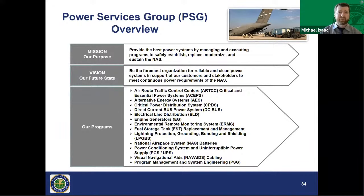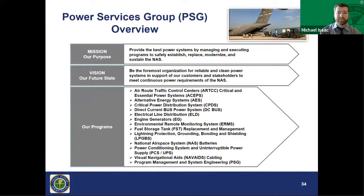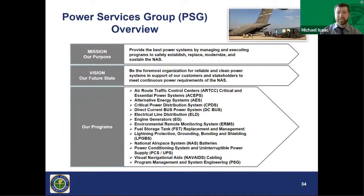We currently execute across 13 different program areas. Highlights include: ASEPS — Air Route Traffic Control Center Critical and Essential Power Systems, currently modernizing power systems at centers across the country; AES — Alternative Energy Systems, with a strong push to increase use of renewables and decrease reliance on diesel fuel, with opportunities anticipated in the near future; CPDS — Critical Power Distribution System, a standard power system for medium to large air traffic control towers and TRACONs; and LPGBS — Lightning Protection, Grounding, Bonding, and Shielding, with key opportunities anticipated in the near future.